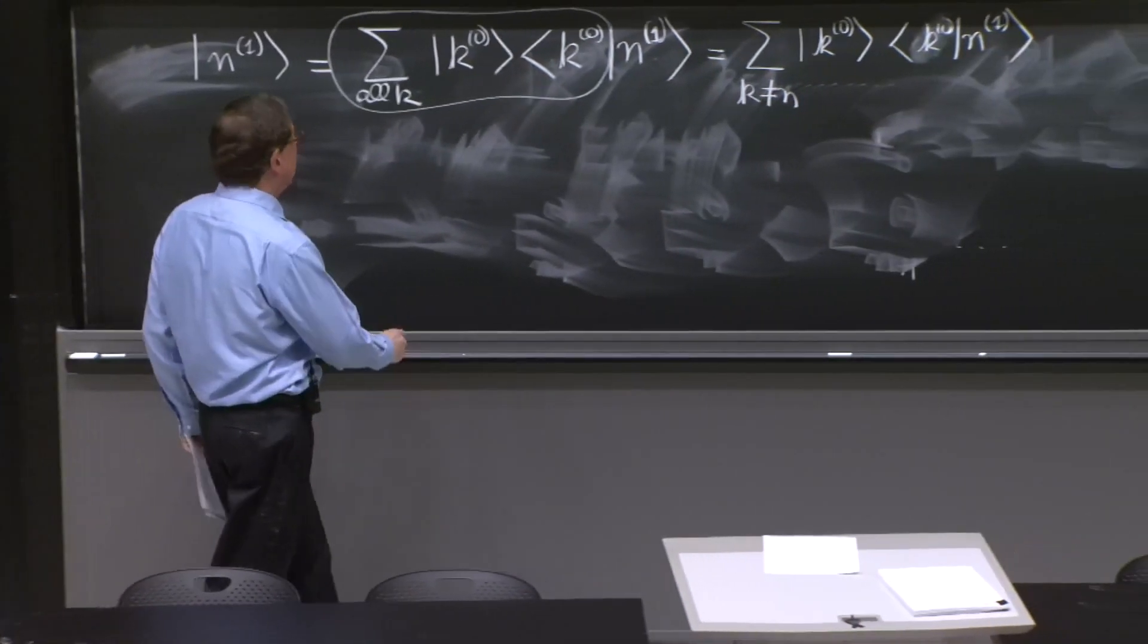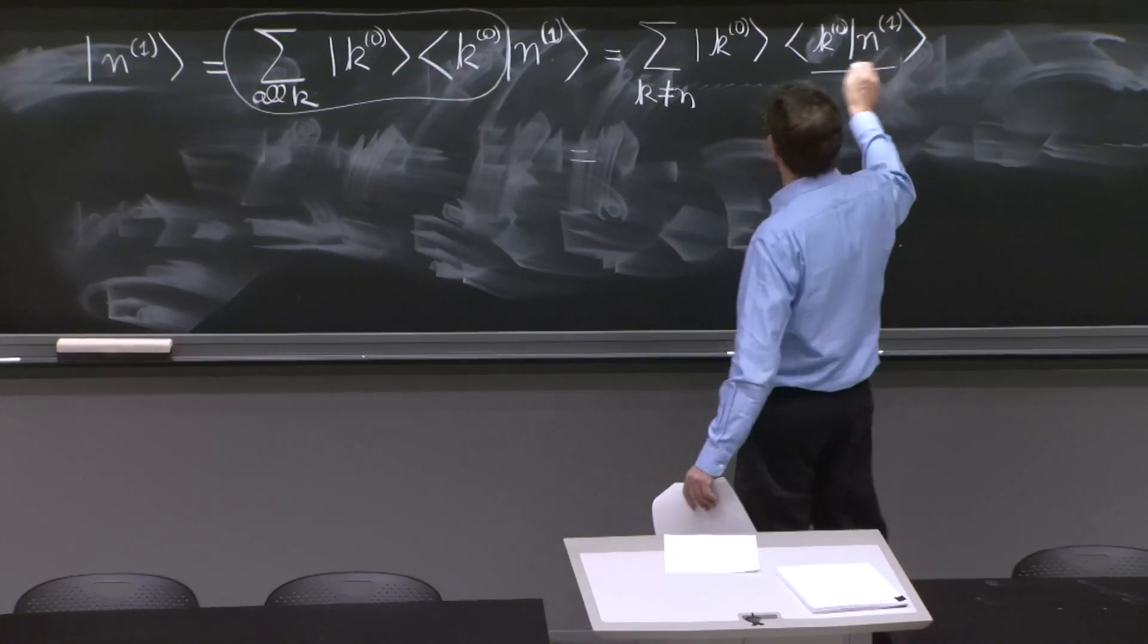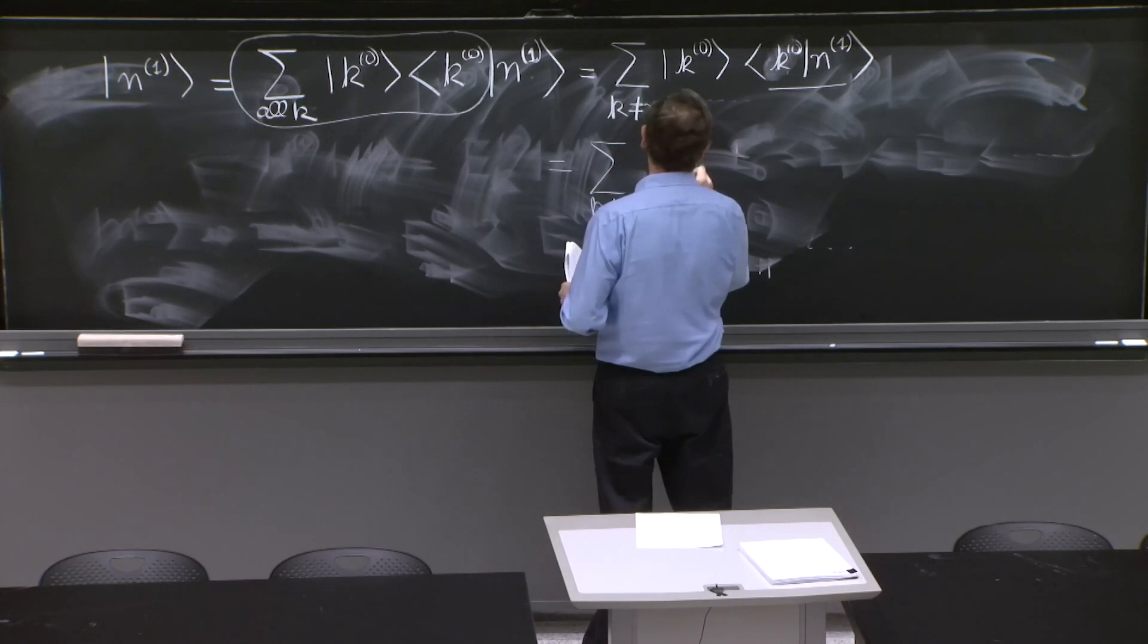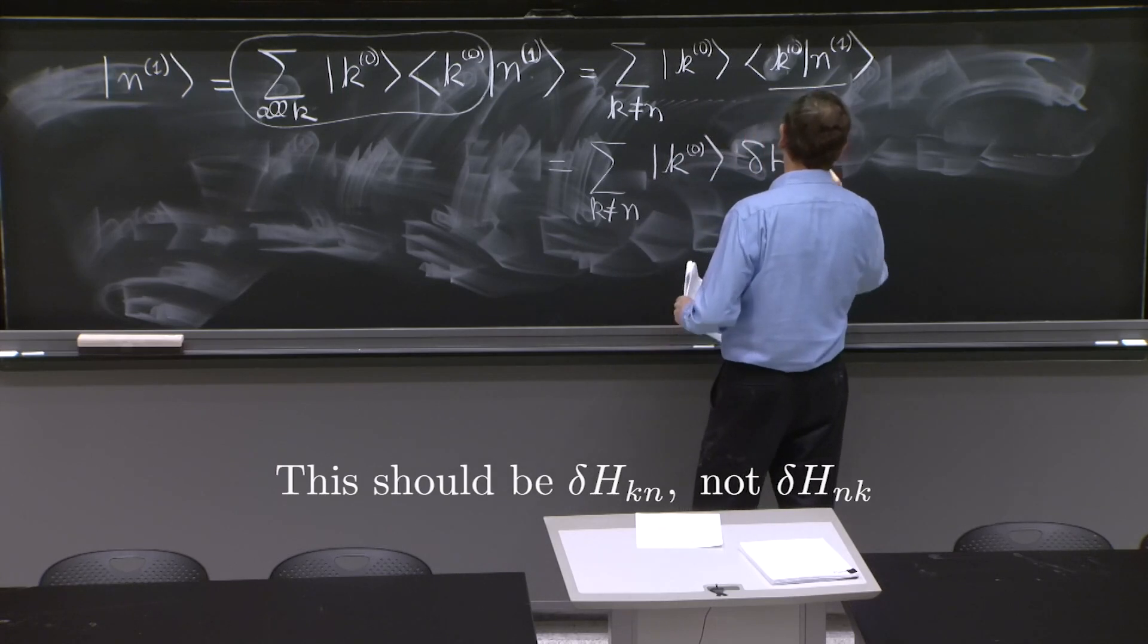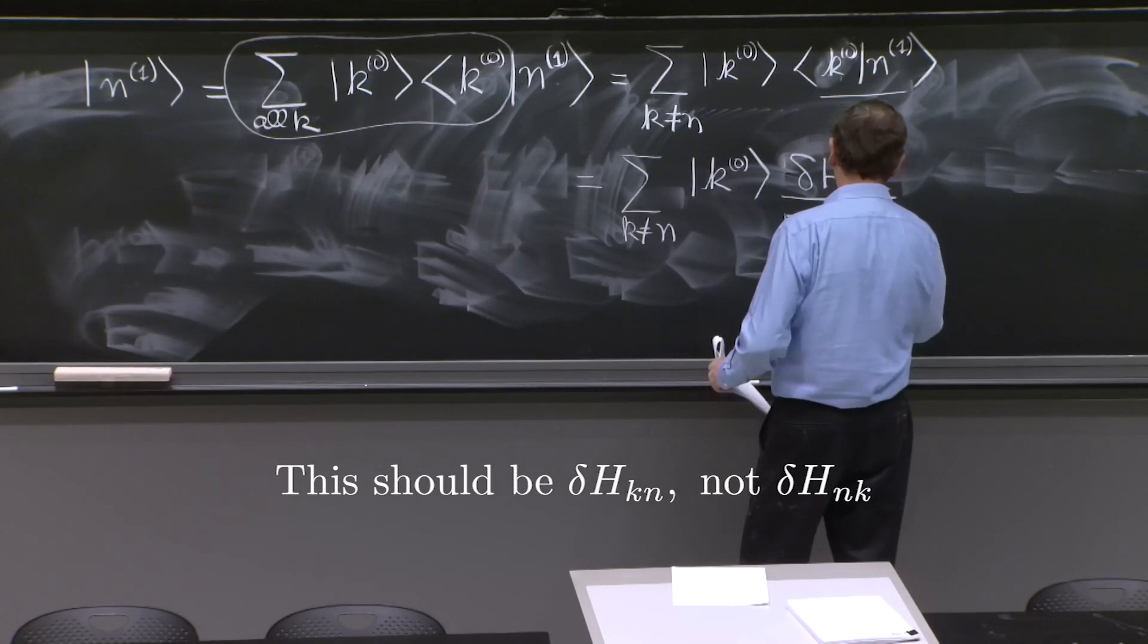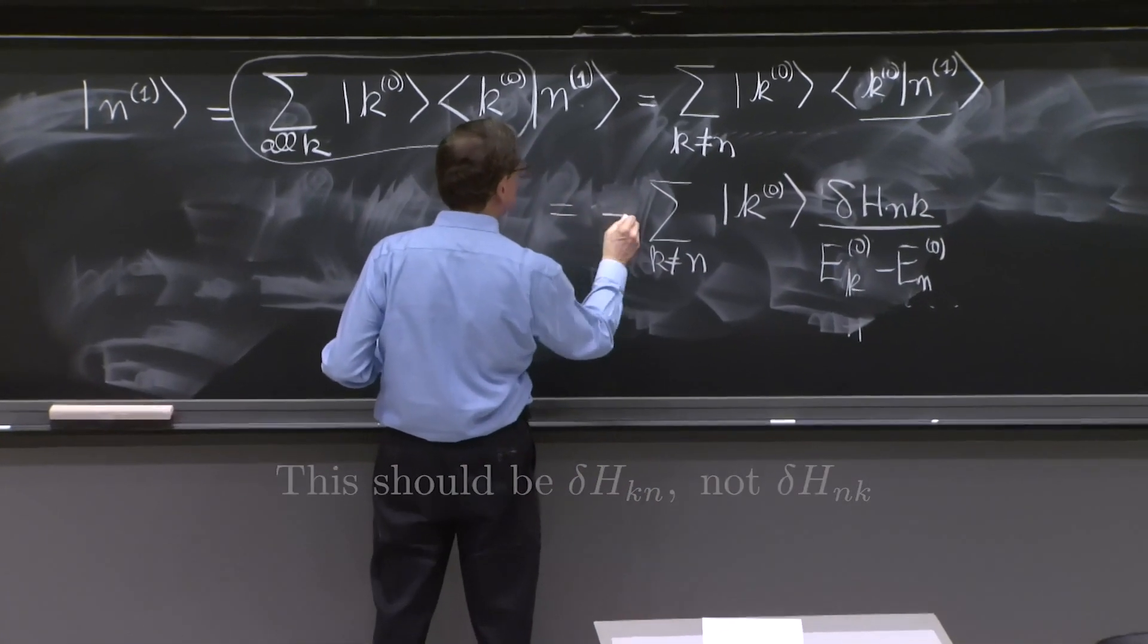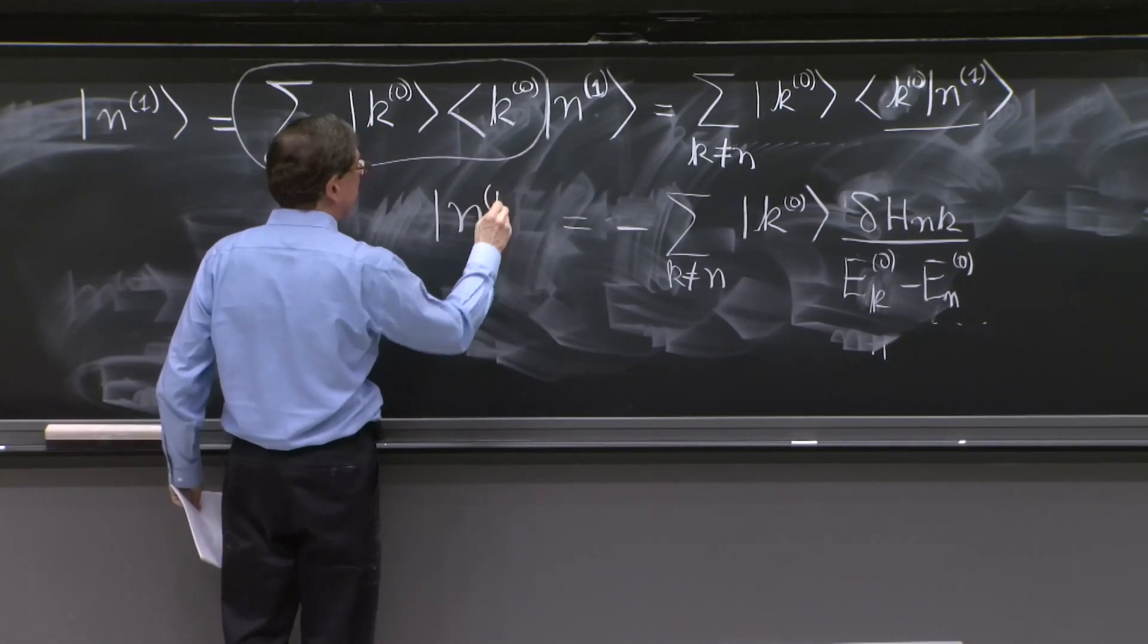And that's what we calculated here. So what did we get? Therefore, the state n1—I can substitute what we had there—it's the sum from k different from n of k0 delta H_nk over E_k0 minus E_n0. That's n1. I should have a minus sign. The minus sign is there. That's the state n1.